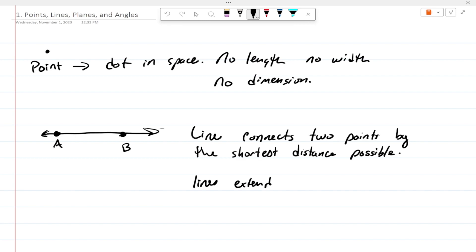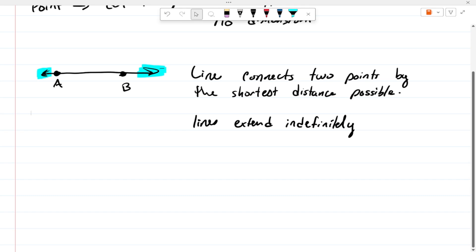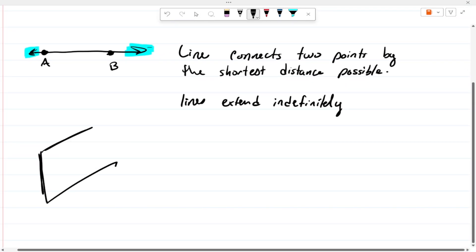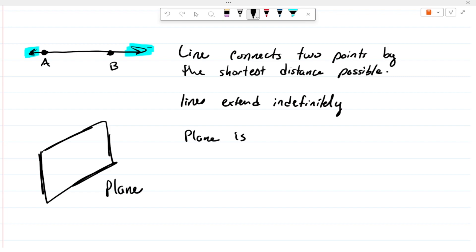Lines also extend indefinitely, which is kind of abbreviated here by the arrows on either side of this line. They just keep going on forever and ever and ever. Now, the next thing we have is what we call a plane. A plane kind of looks like this. Now, a plane is a flat surface in space. Now, planes, although it does not extend indefinitely, it does have some sort of a thickness.